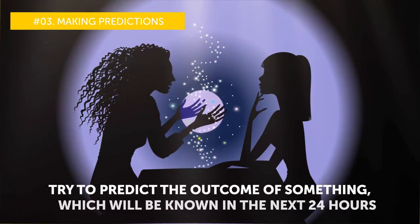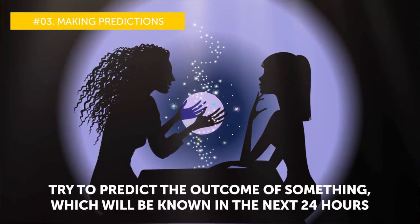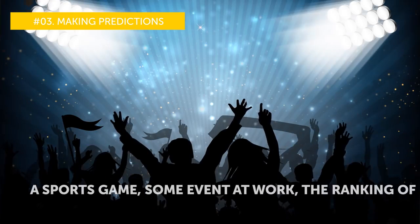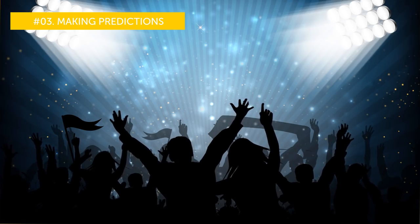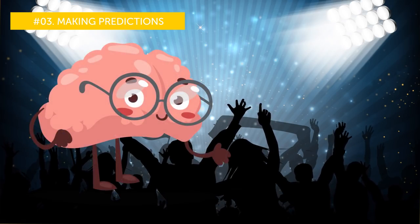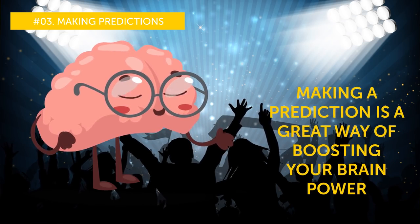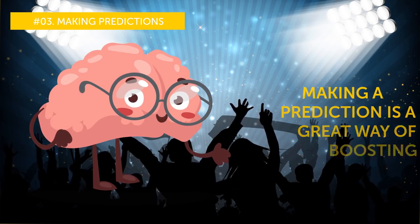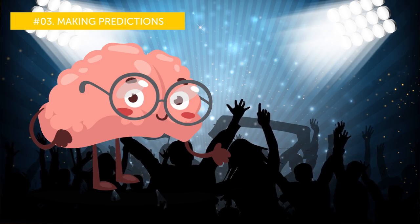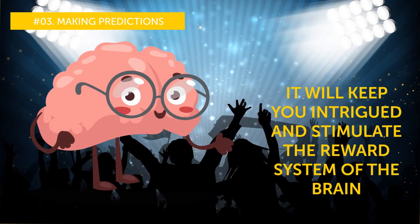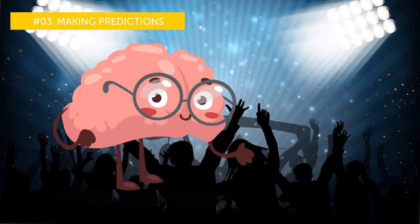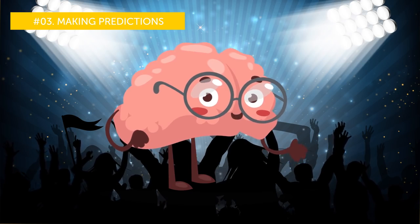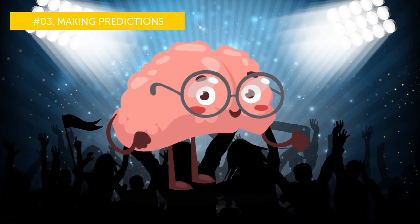Number 3, Making predictions. Try to predict the outcome of something which will be known in the next 24 hours. A sports game, some event at work, the ranking of your favorite band in the music chart. It can be whatever. Then wait to find out the results. What's the point of it? Making a prediction is a great way of boosting your brain power. First, it takes some imagination to do it. Second, it will keep you intrigued and stimulate the reward system of the brain. According to neuroscientist Judy Willis, MD, if you were right, you would be happy. If you were wrong, you will make your conclusions and might learn something new.